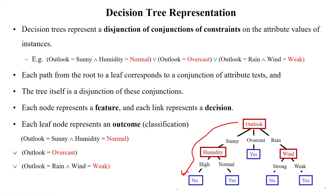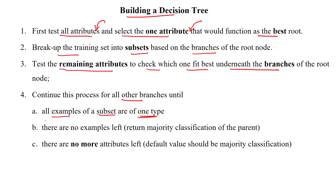This process continues until all examples in a subset belong to one class. For instance, all samples in one path belong to class 'no', while other paths all belong to class 'yes'. All samples of the subset should be classified into one class. We also verify there are no samples left without classification and no more attributes left to check.